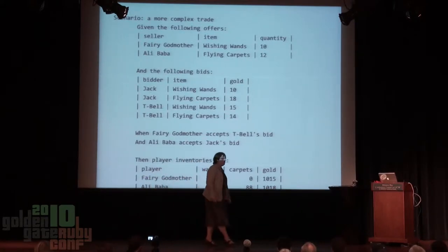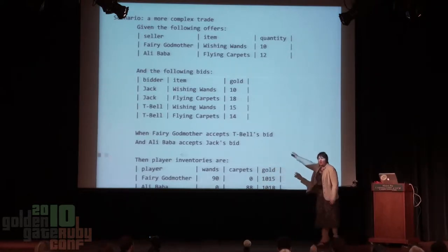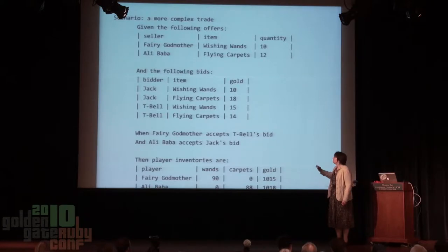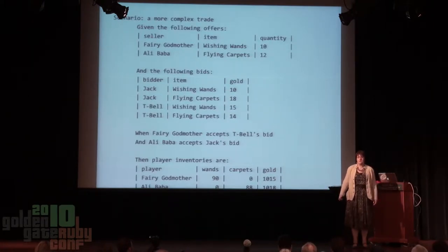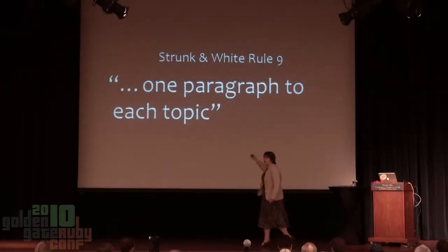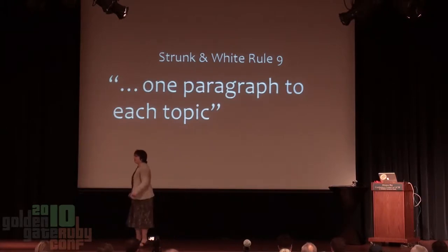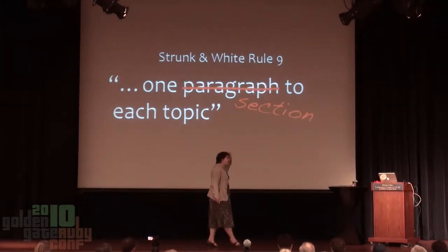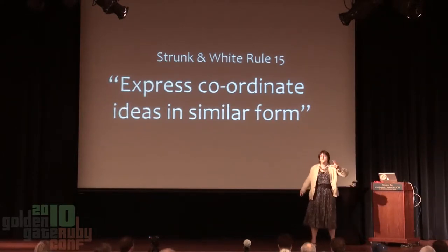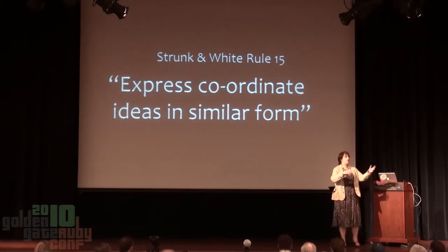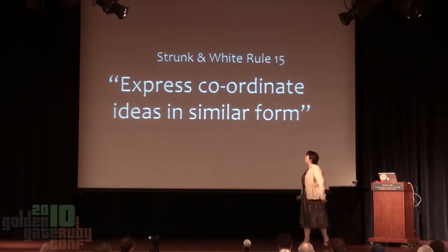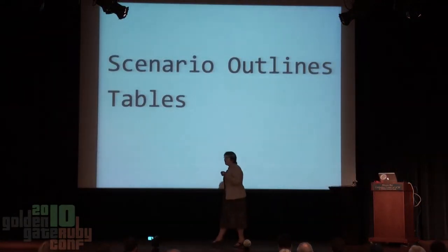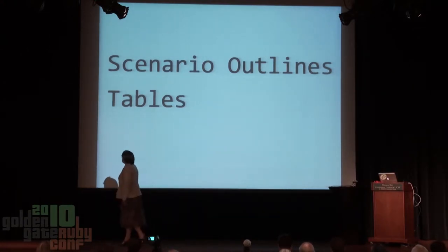Then I refactored it. Cucumber allows you to use tables, so you can express what's going on in sections — offers, bids, which bids were accepted, and the final state of the accounts. A little bit better? We were following Strunk and White Rule 9: one topic per paragraph. And furthermore, following Rule 15 — putting coordinate ideas in similar form — Cucumber lets you use scenario outlines and tables for this, which is really great.